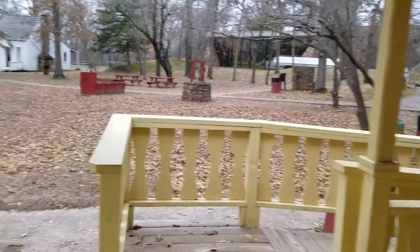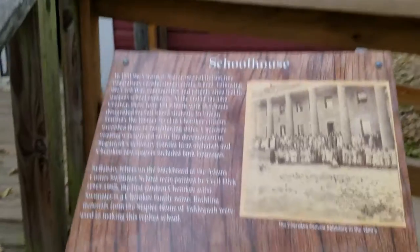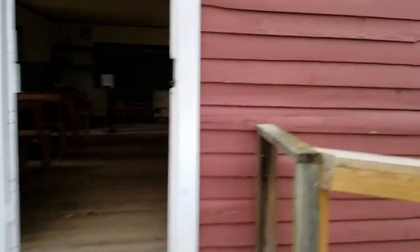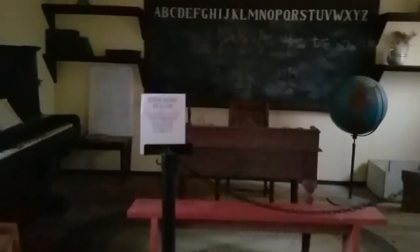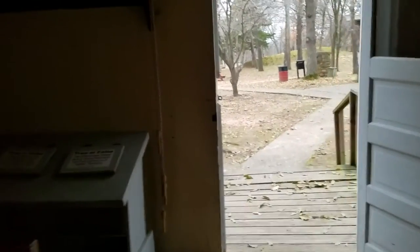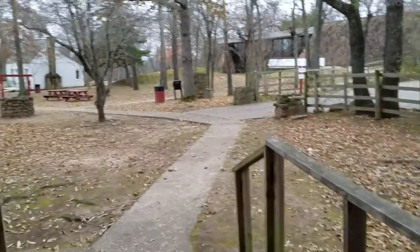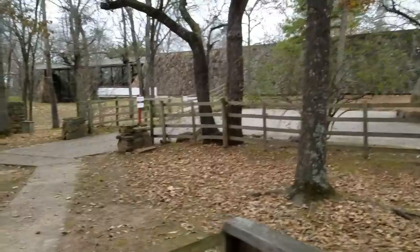The last building to tour is the schoolhouse. When you first pull up on this place you see the three smokestacks from when this was a Cherokee Women's Seminary, which later became the head of the Cherokee Nation. It's amazing to me how small these buildings were. Look at those little chalkboards they wrote on. This one didn't play any audio sayings.